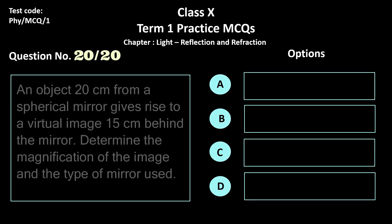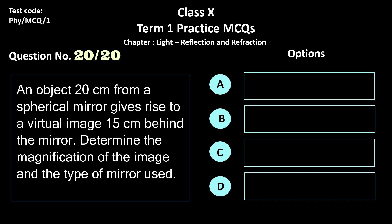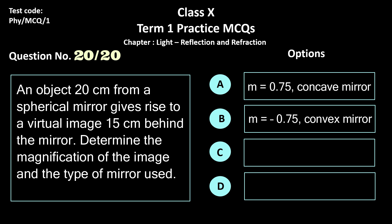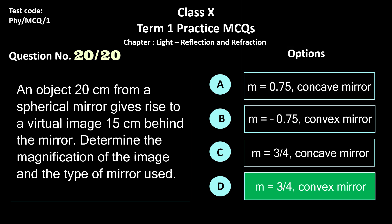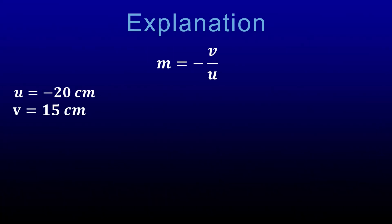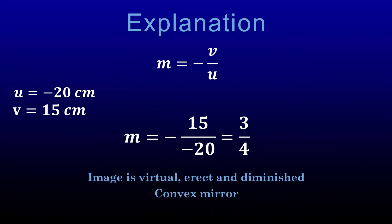Question 20. An object 20 cm from a spherical mirror gives rise to a virtual image 15 cm behind the mirror. Determine the magnification and the type of mirror used. Options: a) m = 0.75, concave mirror, b) m = −0.75, convex mirror, c) m = 3/4, concave mirror, and d) m = 3/4, convex mirror. The correct answer is option d, m = 3/4, convex mirror. Using the magnification formula, m = 3/4, indicating the image is virtual, erect and diminished — such an image is obtained from a convex mirror.